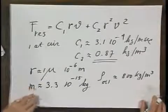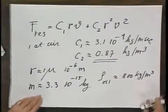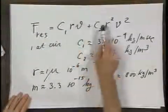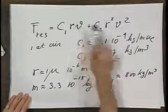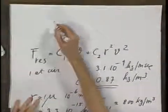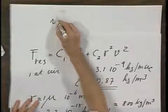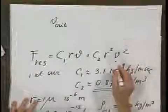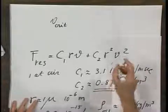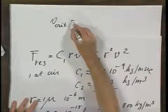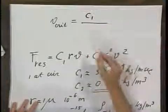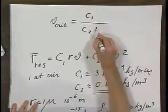If now I want to know at what critical speed these two terms are identical, I can call that the critical speed, and it is given by C₁ divided by C₂ times R.